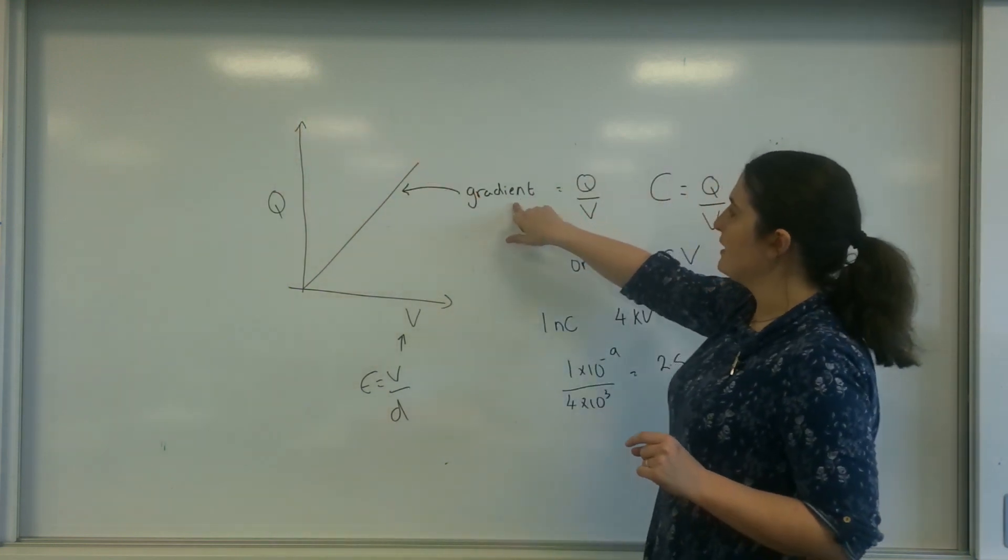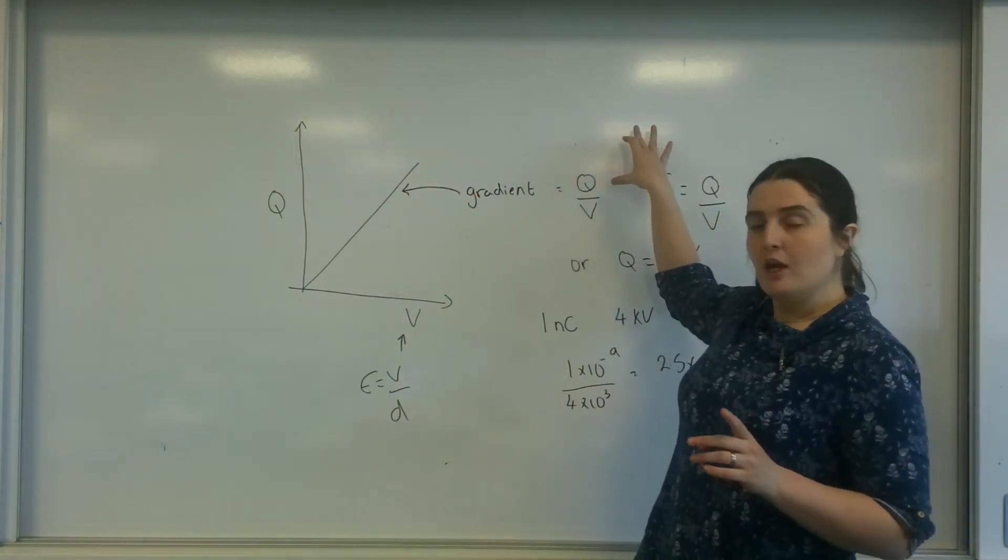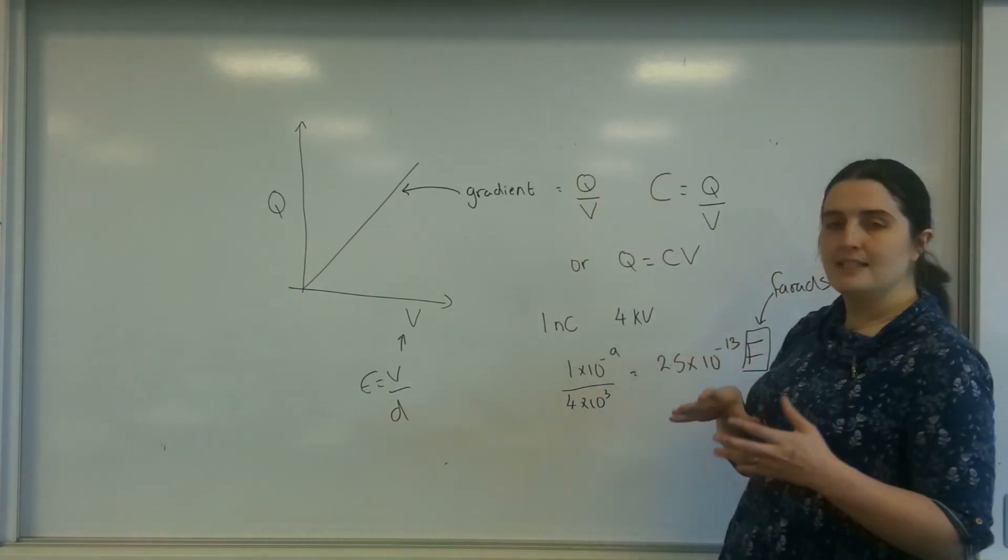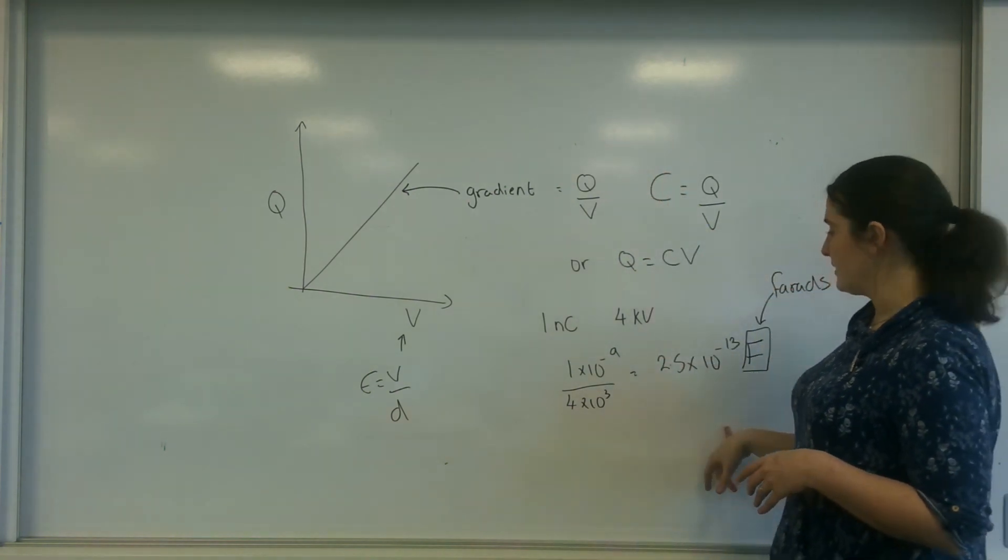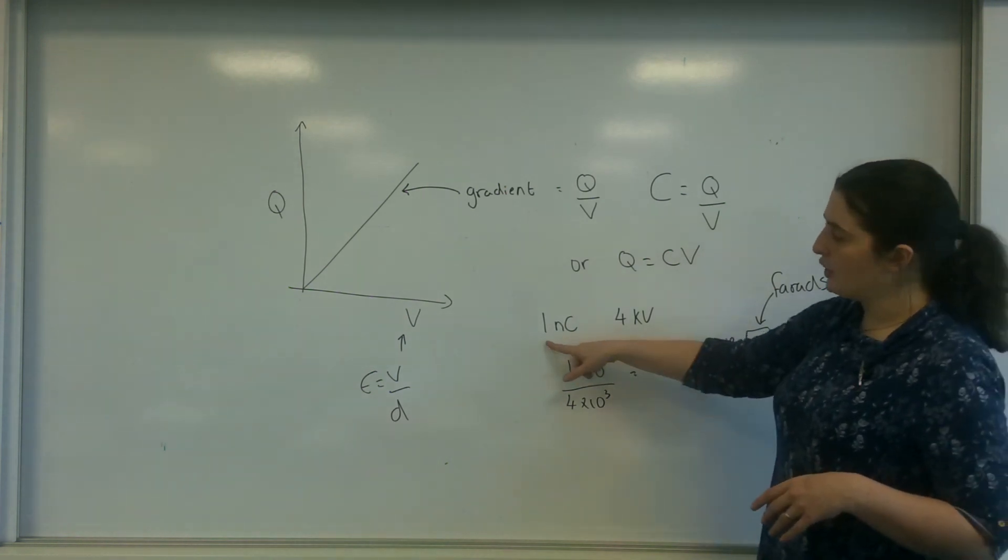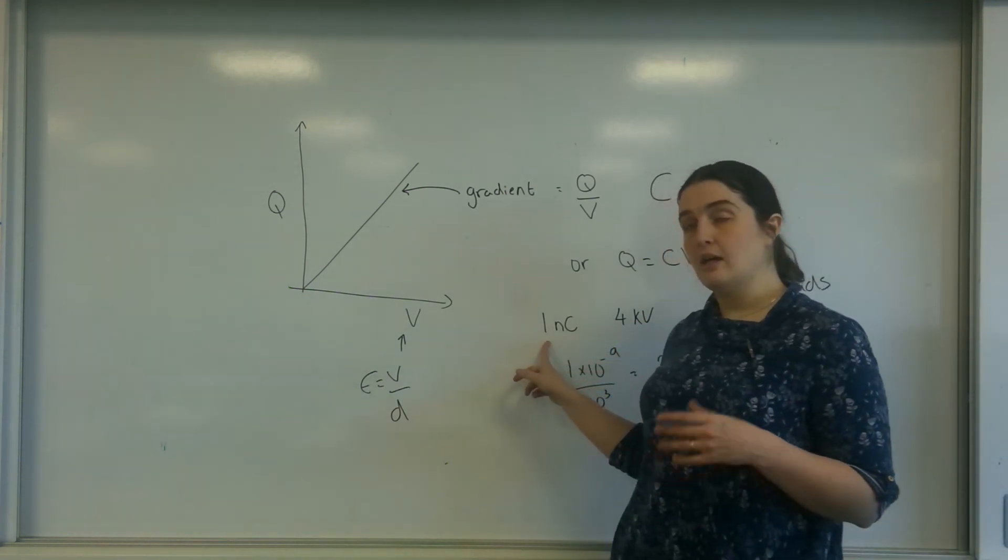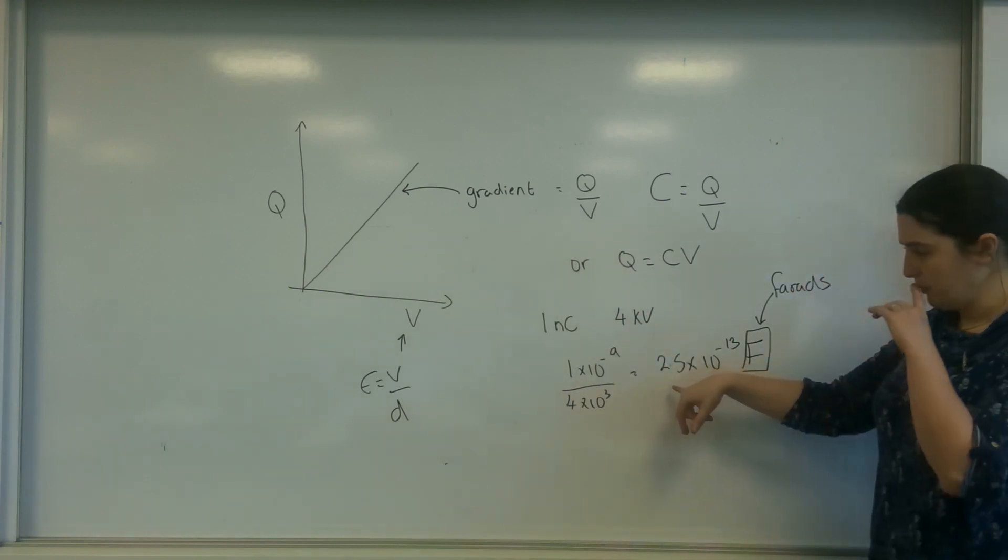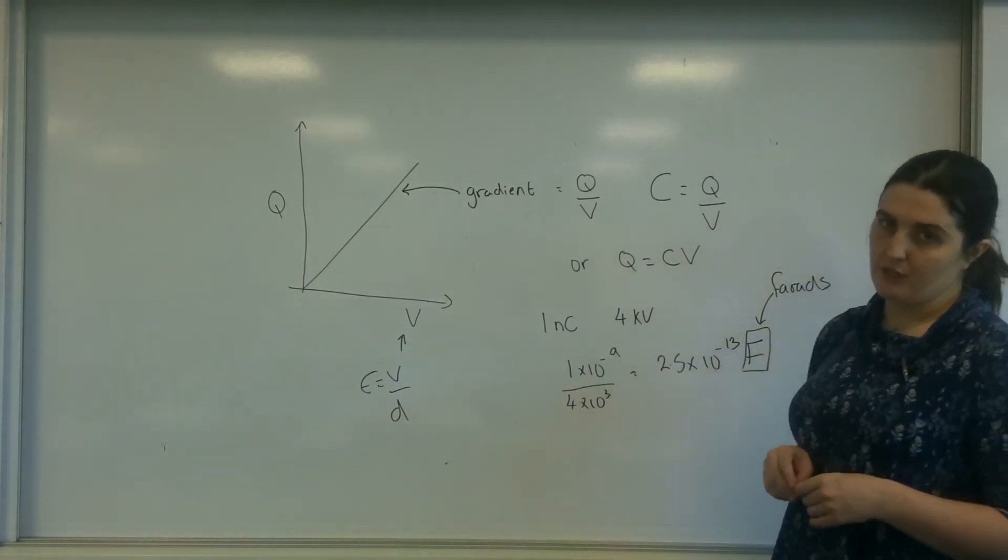Now this gradient, the ratio between Q divided by V, the amount of charge I have per potential, is the capacitance. And I worked out some capacitance here: if I had one nanocoulomb of charge and it took me four kilovolts to do that, my capacitance was 2.5 times 10 to the minus 13 farads.